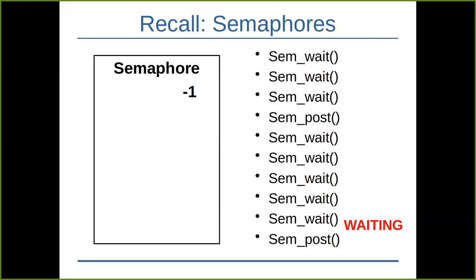The blocking version uses sem_wait; the non-blocking version uses sem_trywait. sem_trywait behaves identically to sem_wait on success. On failure — when it would have blocked — it returns EAGAIN or EWOULDBLOCK, meaning it cannot proceed right away without blocking, so the semaphore value is not updated. The choice between blocking and non-blocking depends on the parameter passed to channel_send or channel_receive.